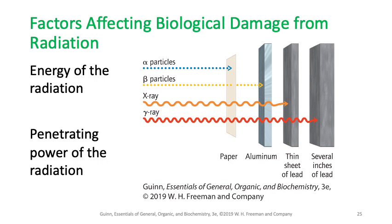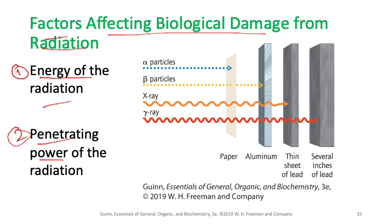Two factors determine how much biological damage ionizing radiation causes: first, the energy of the radiation, and second, its penetration power — meaning how far that radiation can pass through matter.